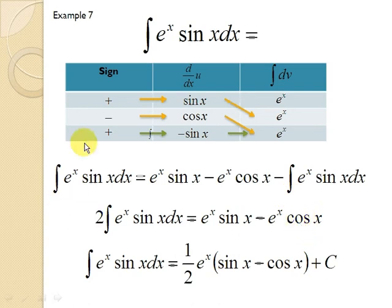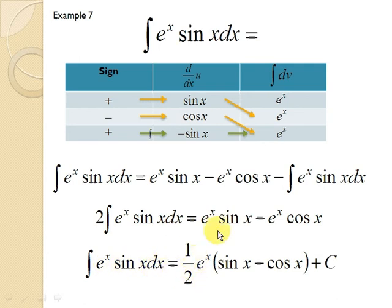Since the question asks for the integral of e^x sin(x) dx, you divide both sides by 2. The answer is the integral of e^x sin(x) dx equals one-half times e^x, factoring out e^x, multiplied by (sin(x) minus cos(x)), plus C.